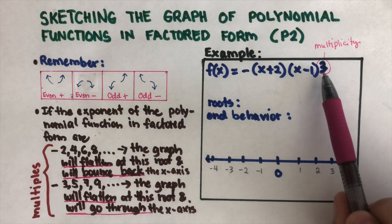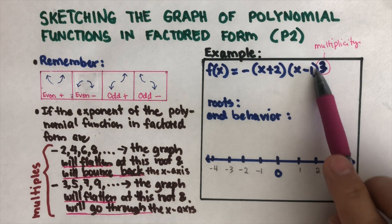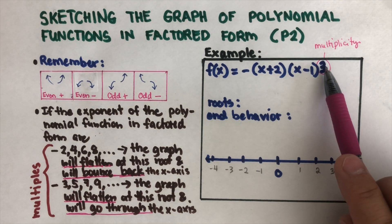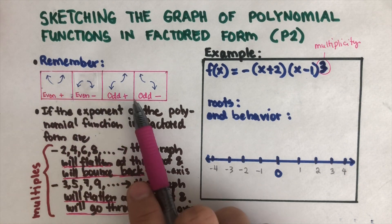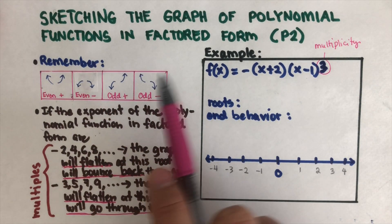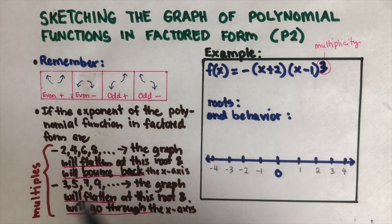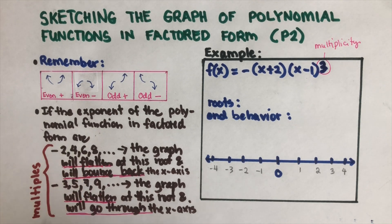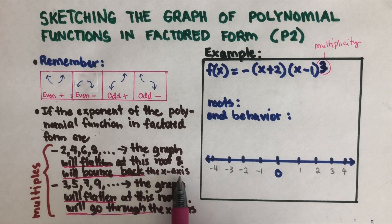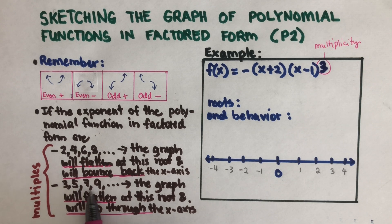Multiplicity refers to the exponent of the binomial in factored form. The same rules from the previous part apply, but there's a separate rule for multiplicity: if the multiplicity is a multiple of two, four, six, or eight, the graph will flatten at that root and bounce back from the x-axis. If it's a multiple of three, five, seven, or nine, it will flatten and go through the x-axis.